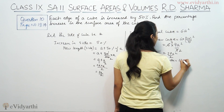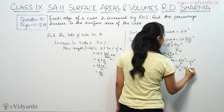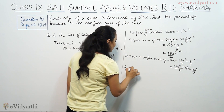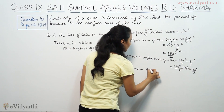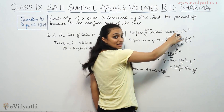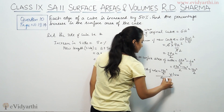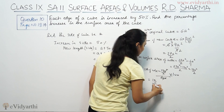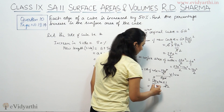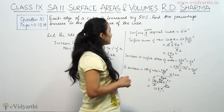The increase in surface area is 27A²/2 minus 6A², which equals 27A² minus 12A² over 2, giving us 15A²/2. Now for the percentage increase in surface area, we divide the increase by the original area and multiply by 100: (15A²/2) divided by 6A², times 100. The A² terms cancel, giving us 15/2 times 100 times 1/6, which equals 125%. So the surface area increases by 125%.